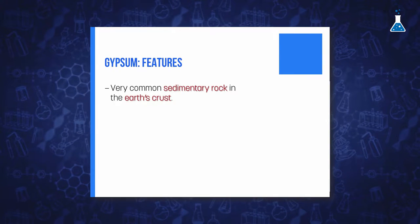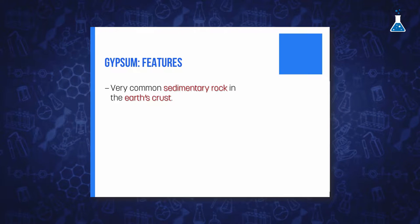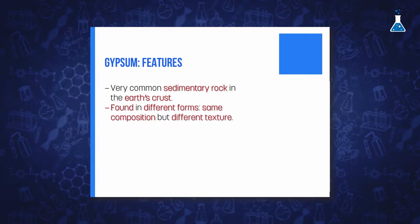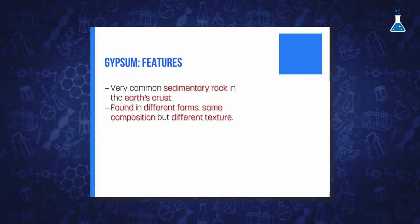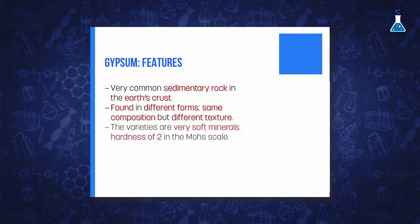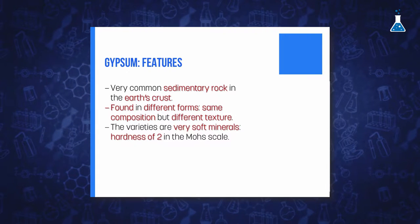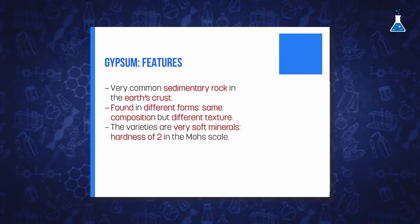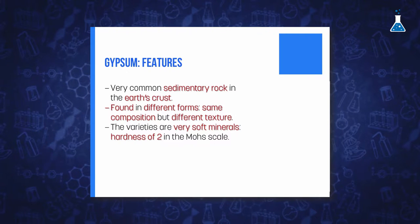Gypsum is also used in the baking industry as supplemental calcium, in wallboards, and so on. It is one of the most common sedimentary rocks in the earth's crust and can be found in different forms which have the same composition but different texture. Most varieties of gypsum are a very soft mineral with a hardness of two on the Mohs scale.